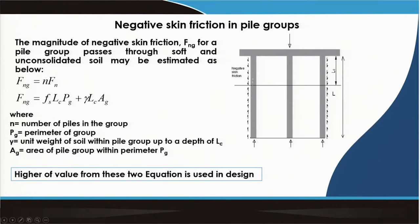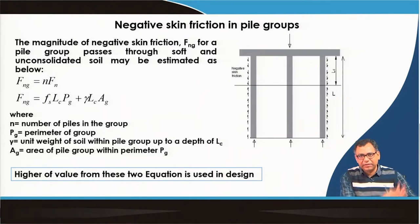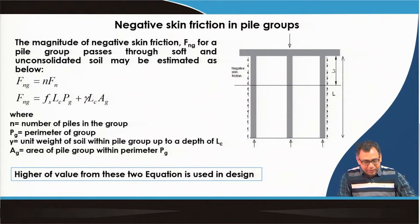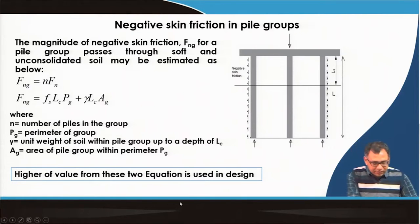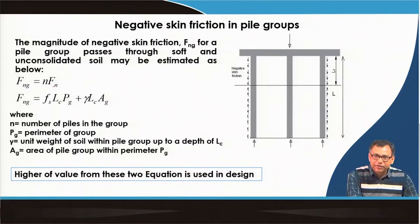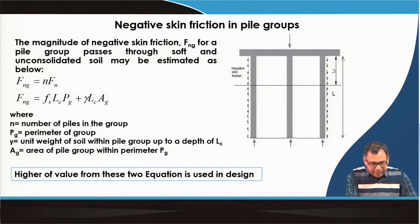This is the group pile. The negative skin friction cases are the same as discussed for the single pile. The difference is how we determine the negative skin friction for the group pile. First, we calculate the negative skin friction for the single pile, then multiply with the number of piles. So this is the group negative skin friction: we determine the negative skin friction for a single pile and multiply it with the number of piles.